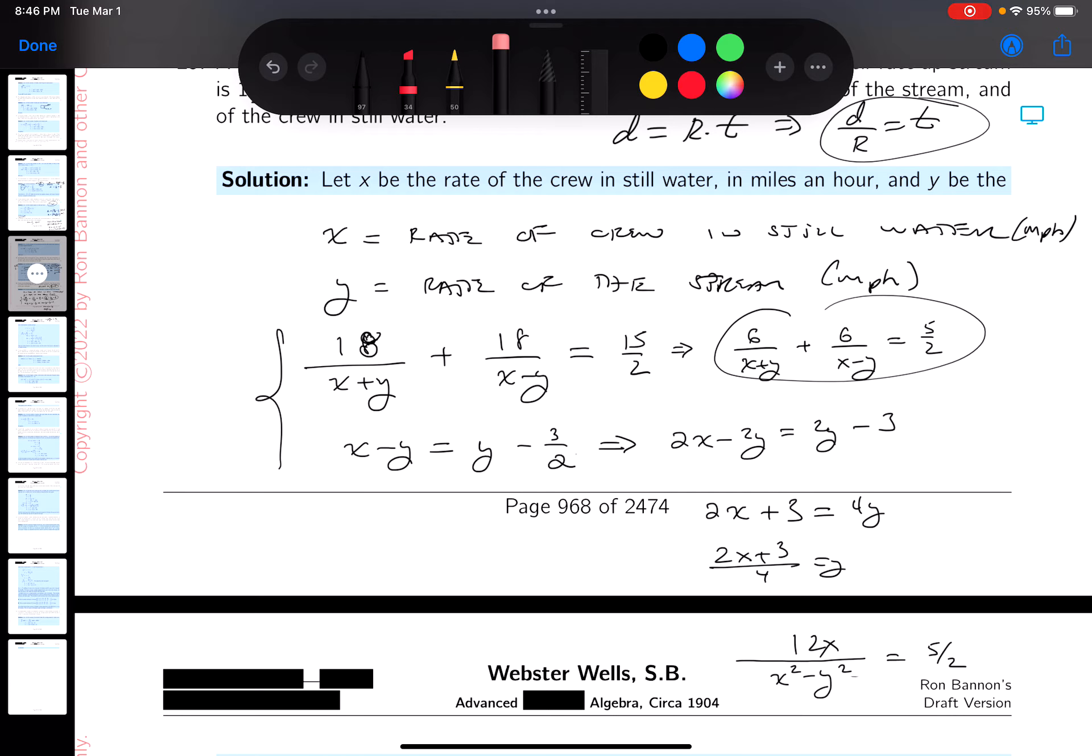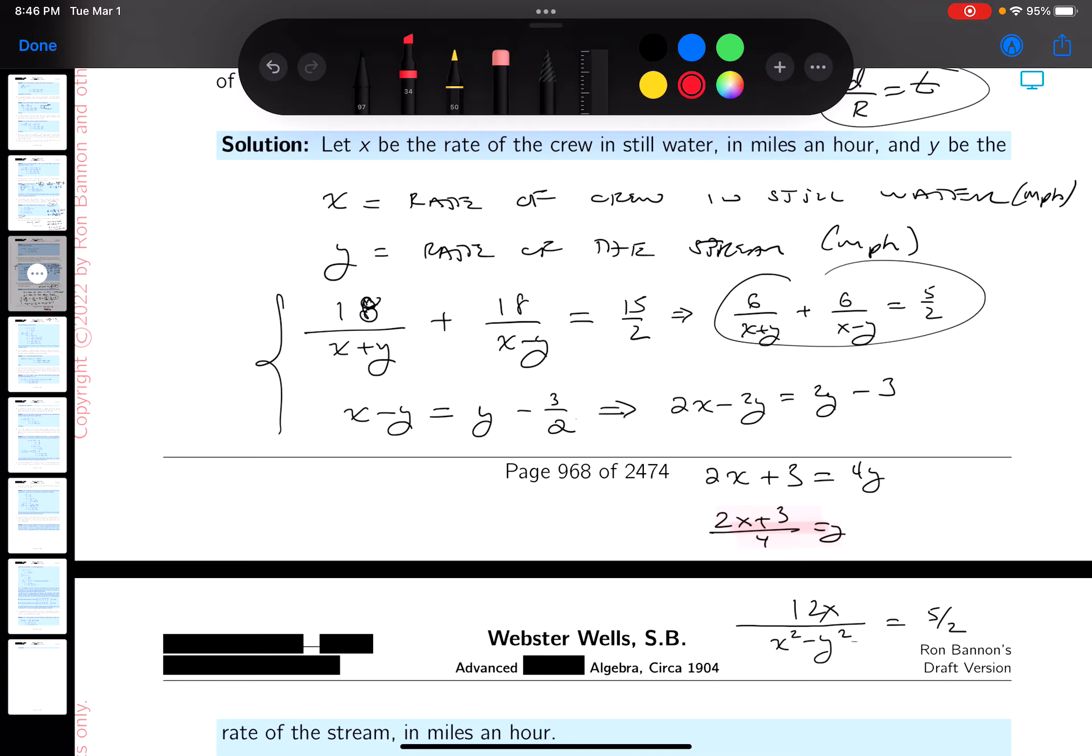I'm gonna keep moving along. I'm gonna use this at some point, but right now I gotta clear the fraction. You get 24X equals 5X squared minus 5Y squared.